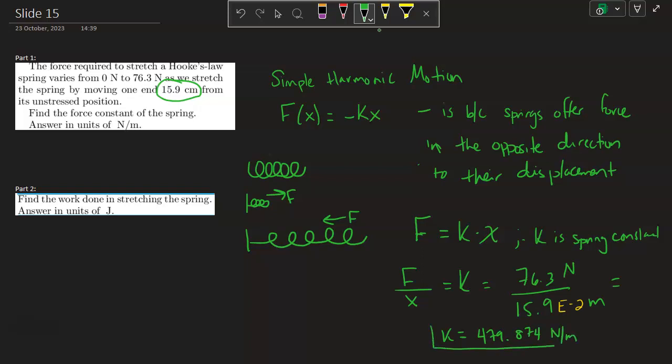Then find the work done in stretching the spring, answering in units of joules. This equation is given: the potential energy of the spring is equal to one half k x squared. The potential energy is the work. The potential energy stored in the spring is going to equal the work that you do.